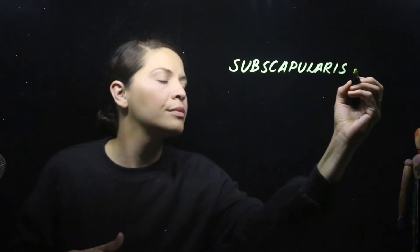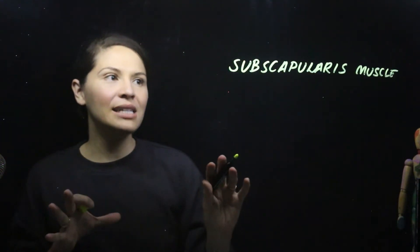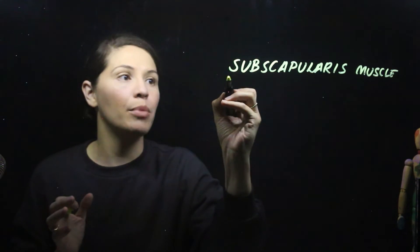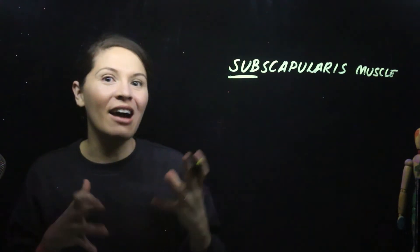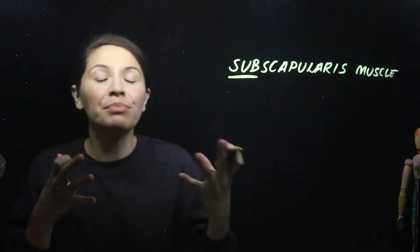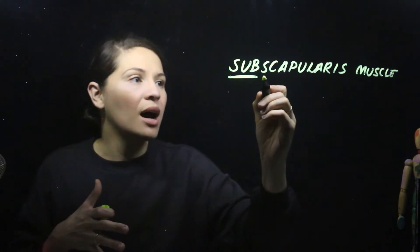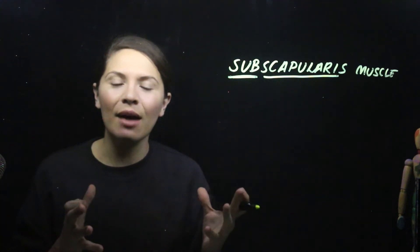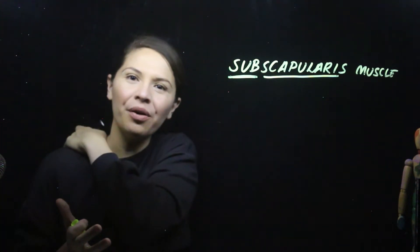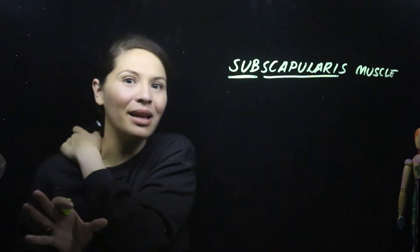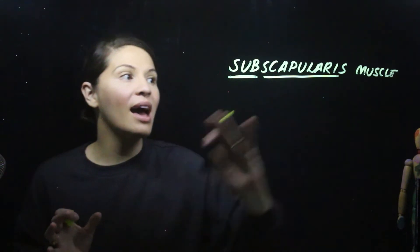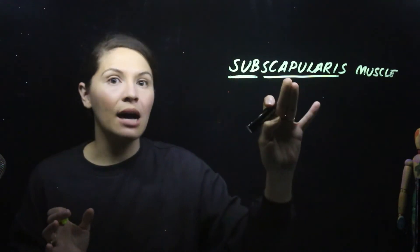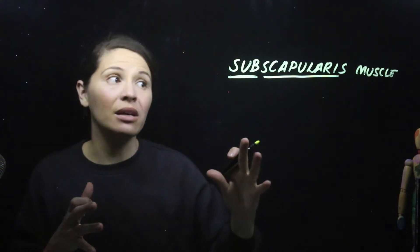Let's look at the subscapularis muscle. The prefix used here is sub, which is common in everyday language and means below. The root word is scapularis, which is related to the scapula — that funny shaped bone on your back, also known as your shoulder blade. So this is telling us we have a muscle underneath the scapula.